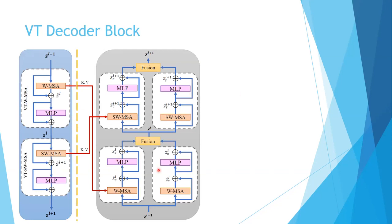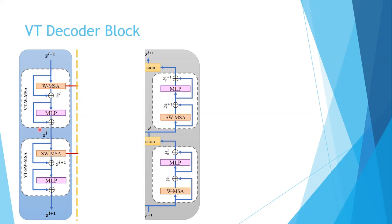Now we look at the decoder block. The decoder is everything to the right of the dashed yellow line, while the encoder was shown previously on the left. The right side of the decoder is structurally the same as the encoder path but information flows from bottom to top. It has window multi-head self-attention followed by shifted window multi-head self-attention.